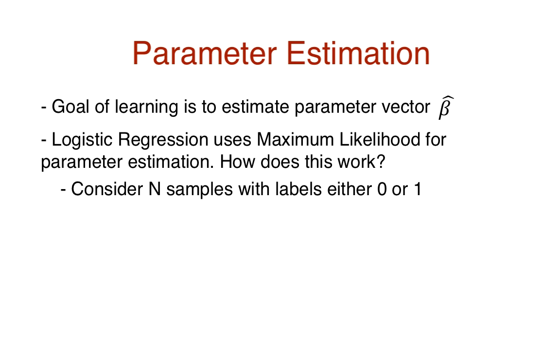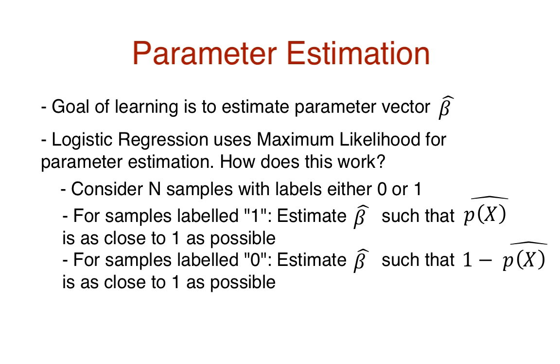For every sample with label 1, the goal is to estimate the vector beta hat such that p(x) hat is as close to 1 as possible. For the sample group with label 0, the goal is to estimate beta hat such that p(x) hat is as close to 0 as much as possible. In other words, 1 minus p(x) hat should be as close to 1 as it could possibly be.